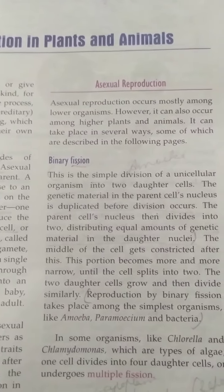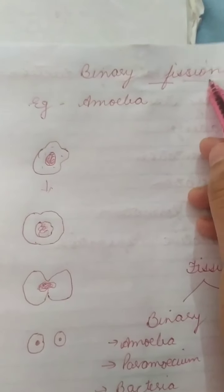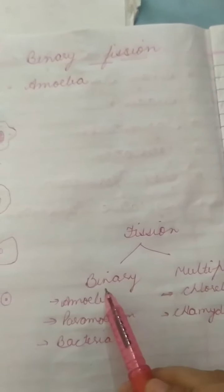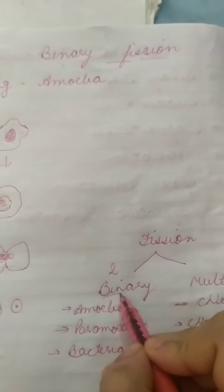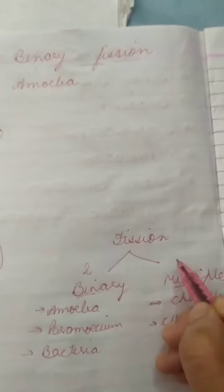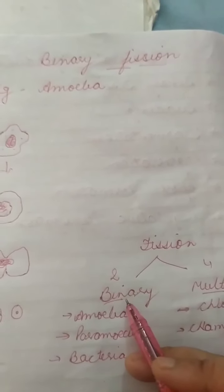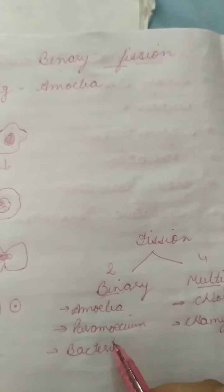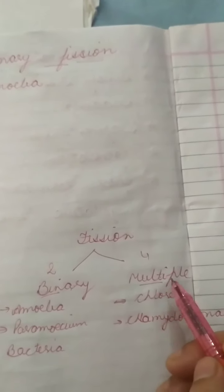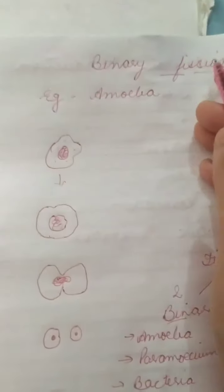Through the diagram I will describe binary fission. There are two types of fission: binary fission and multiple fission. In binary fission, the parent cell divides into two — binary means two. In multiple fission, the parent cell divides into four or more. Examples of binary fission include amoeba, paramecium, and bacteria. Chlamydomonas undergoes multiple fission.